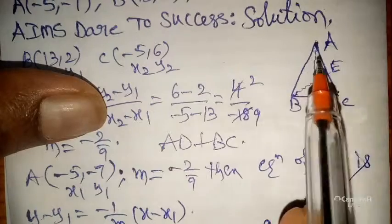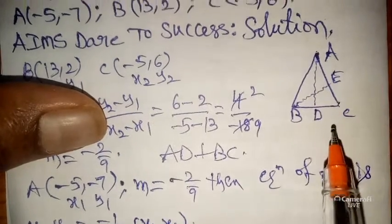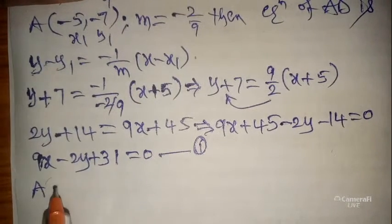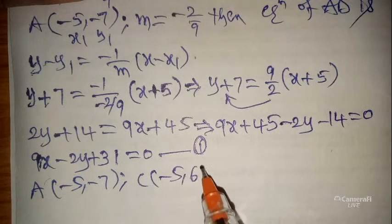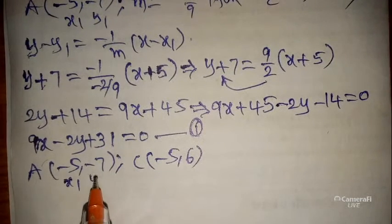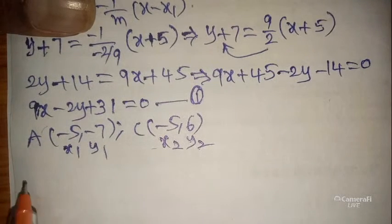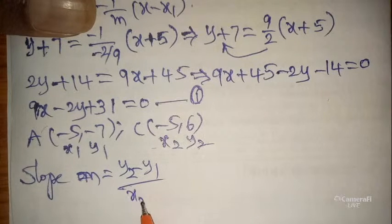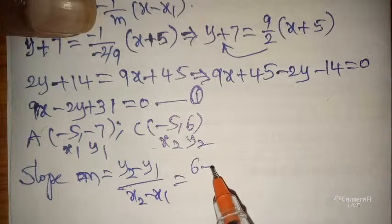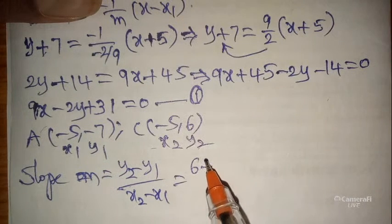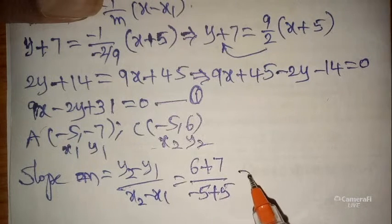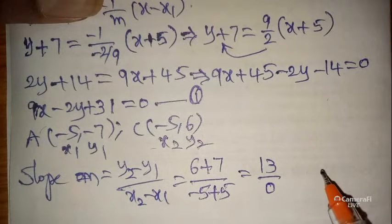In our triangle, BE is perpendicular to AC. So for side AC: A value is (-5, -7) and C value is (-5, 6) — let these be (x1, y1) and (x2, y2). Slope = (y2 - y1) / (x2 - x1) = (6 - (-7)) / (-5 - (-5)) = 13 / 0. Don't write undefined — take it as 13/0.